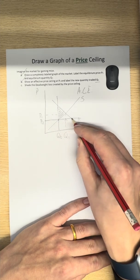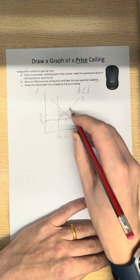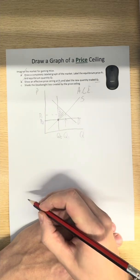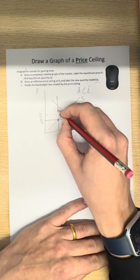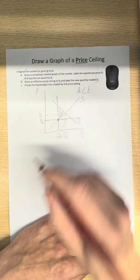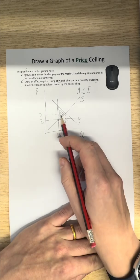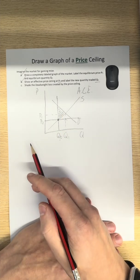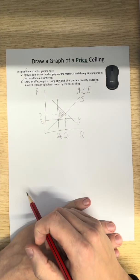So, we always draw that price at the price control, find where it intersects, either supply or demand, and draw a vertical line there to cut that off. There's your new quantity. There's the deadweight loss. Perfect graph of a price ceiling.